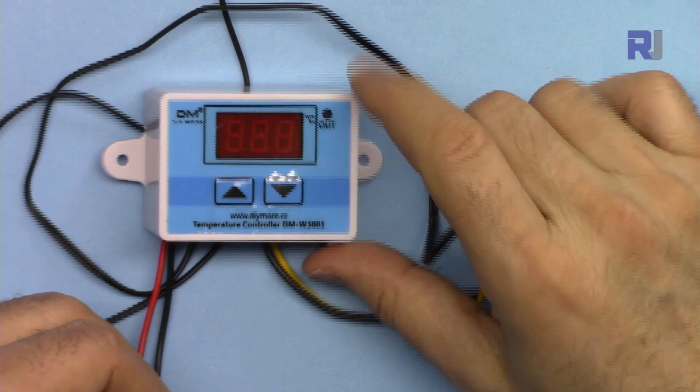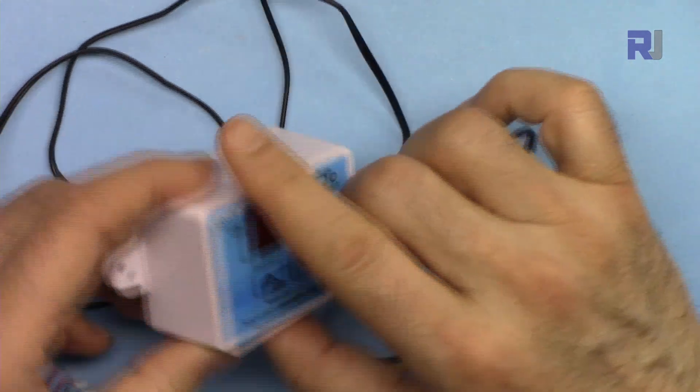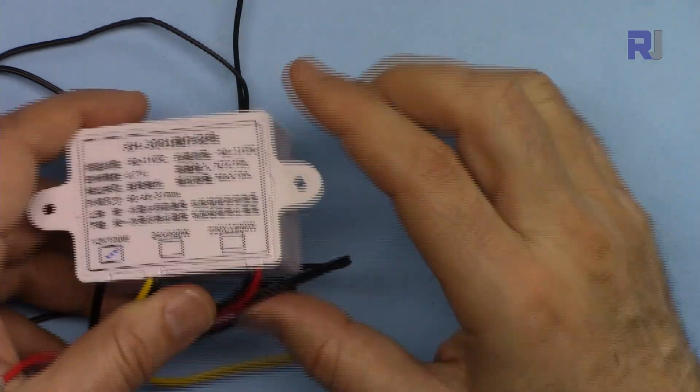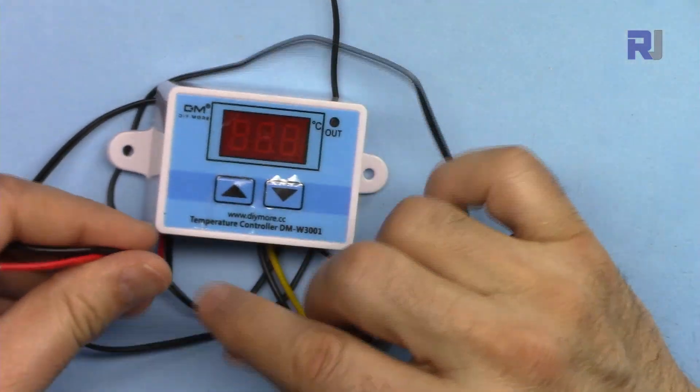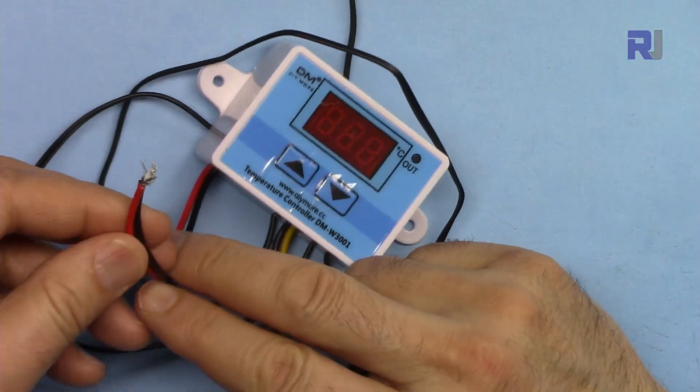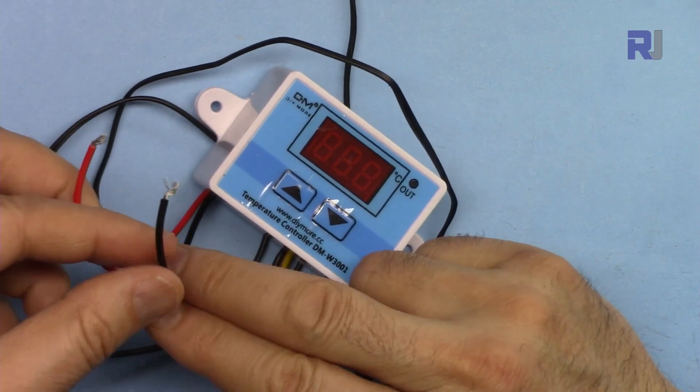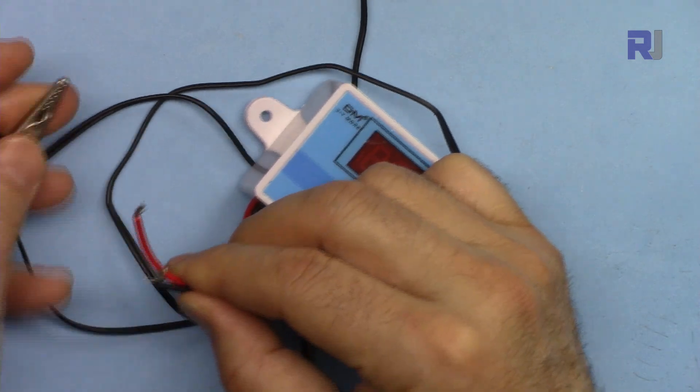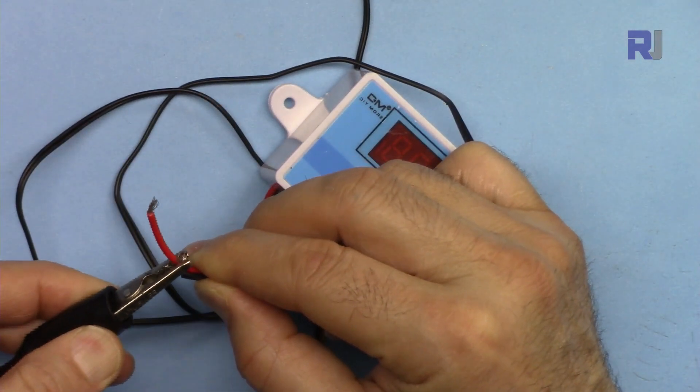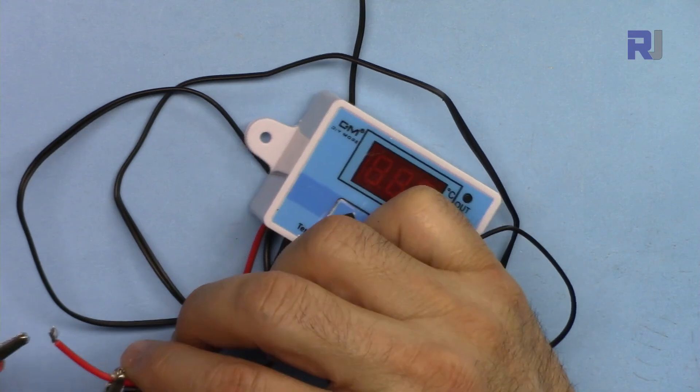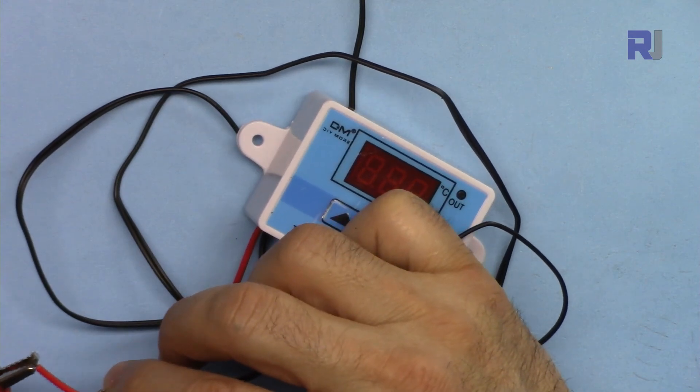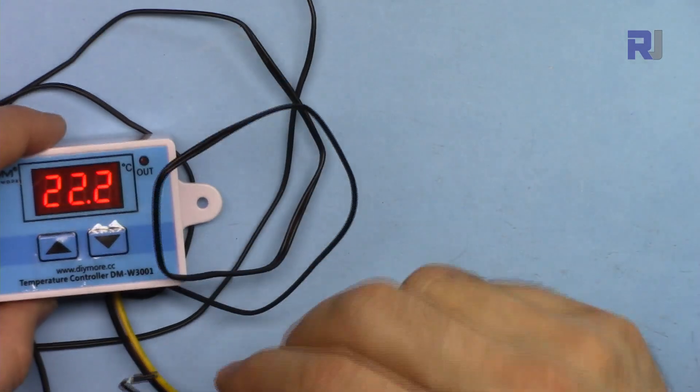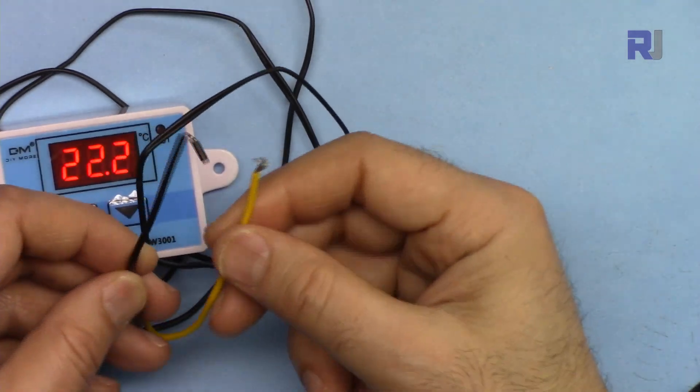Let me explain the wiring. Because this is a DC version you might get 12 volts or 24 volts, doesn't matter. In any case you will connect your power supply to these two wires - the red is the positive, the black is the negative. This is my power supply. I'm going to connect the negative here and connect the positive here.